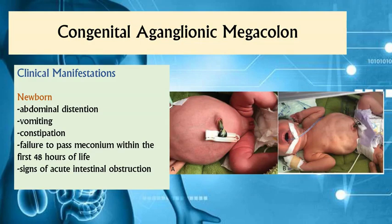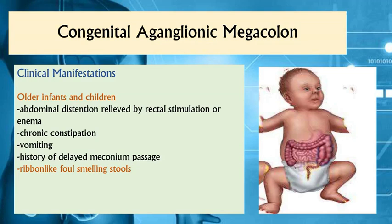For older infants and children, they also experience abdominal distension that can only be relieved by rectal stimulation or enema. Chronic constipation, vomiting, and delayed meconium passing are also evident. Please take note of the passage of ribbon-like, foul-smelling stools, as these would highly suggest congenital aganglionic megacolon.